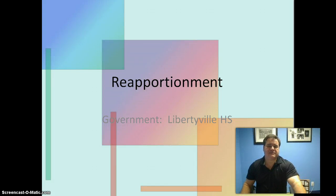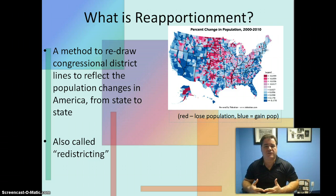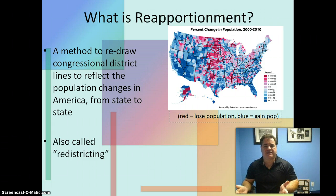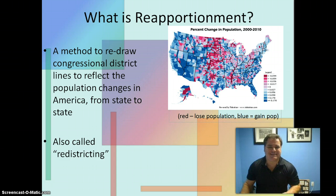Hey class, it's Mr. Duffy again, and it's time to talk about reapportionment. Reapportionment is a method to redraw congressional district lines to reflect the shifts and trends in population changes throughout America over the period of about 10 years. It's also referred to as redistricting.